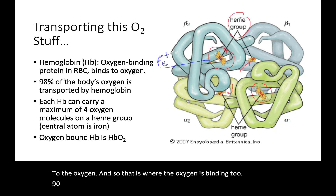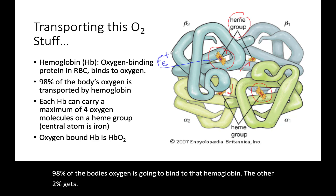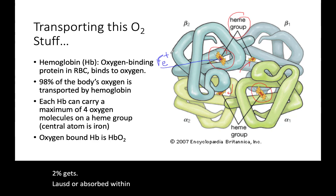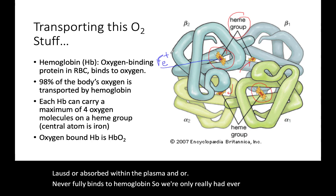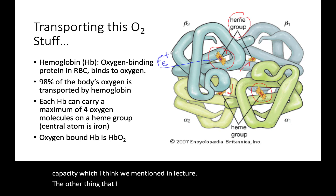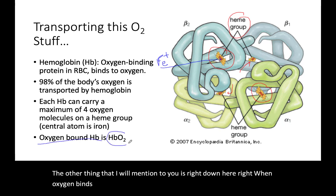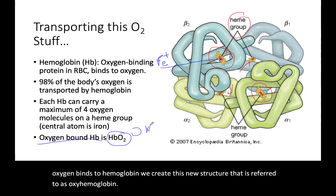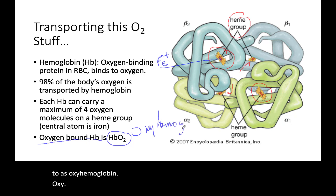98% of the body's oxygen is going to bind to hemoglobin; the other 2% gets absorbed within the plasma or never fully binds to the hemoglobin. So we're only ever at 98% full capacity. When oxygen binds to hemoglobin, we create a new structure referred to as oxyhemoglobin.